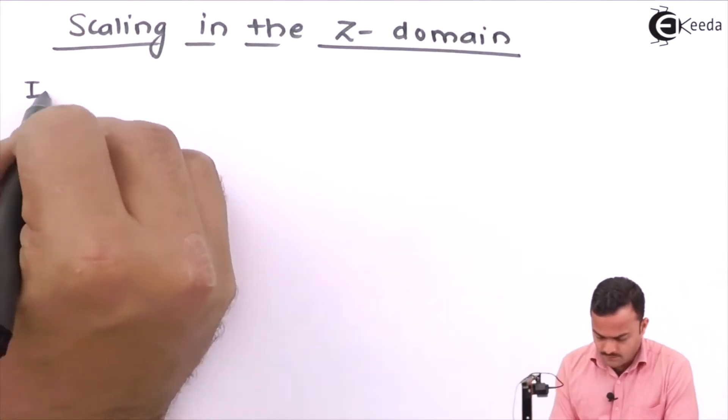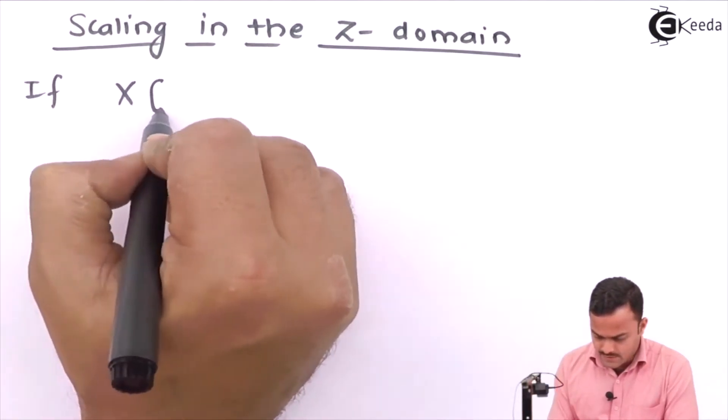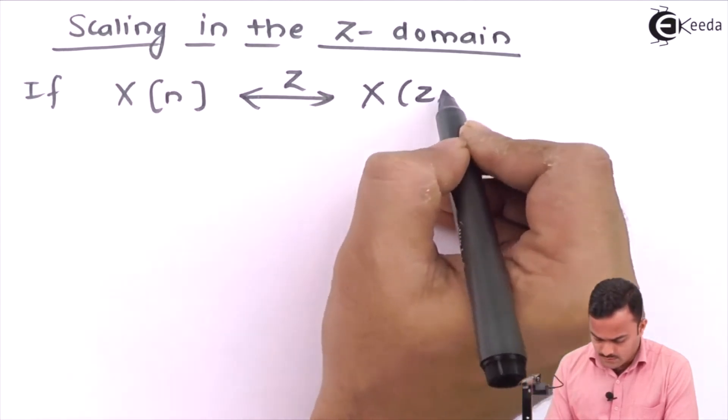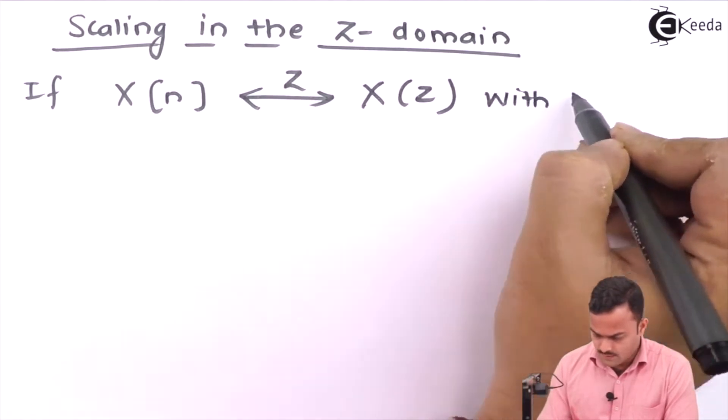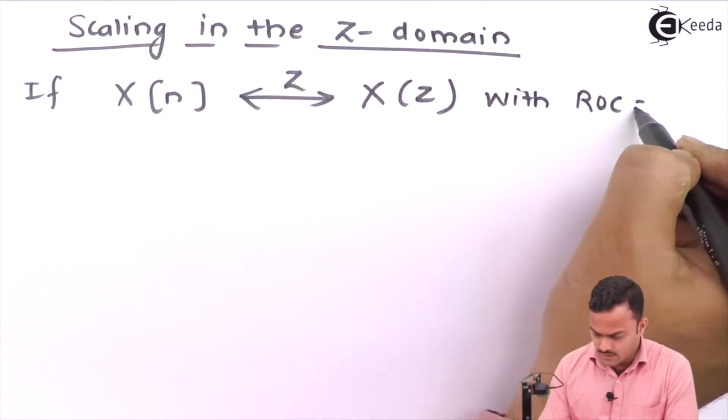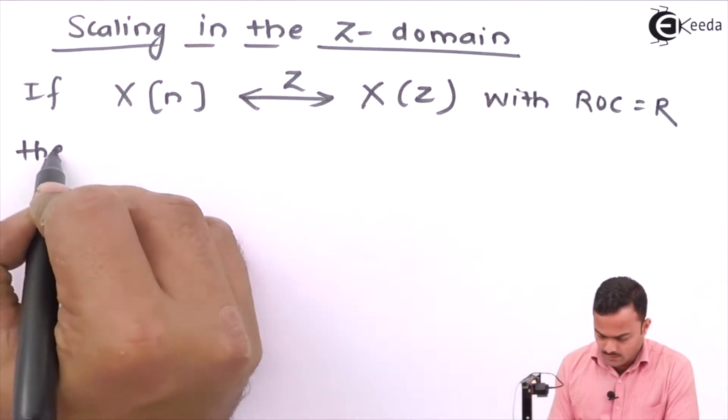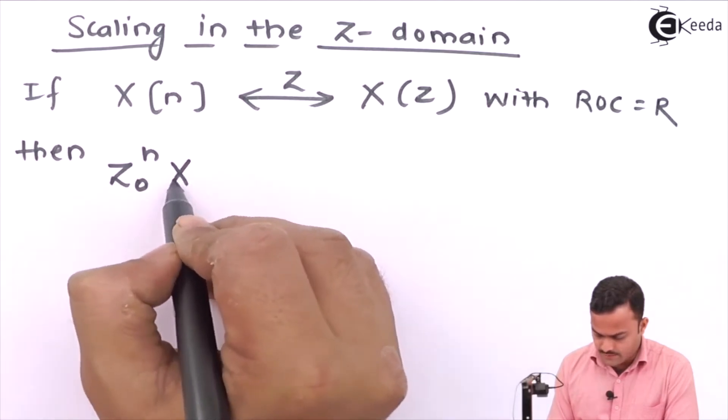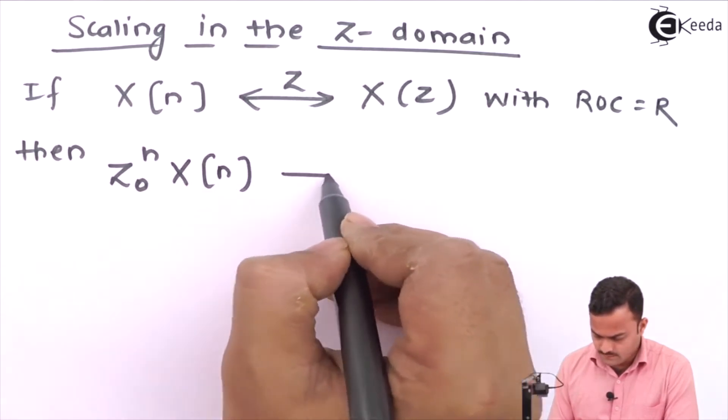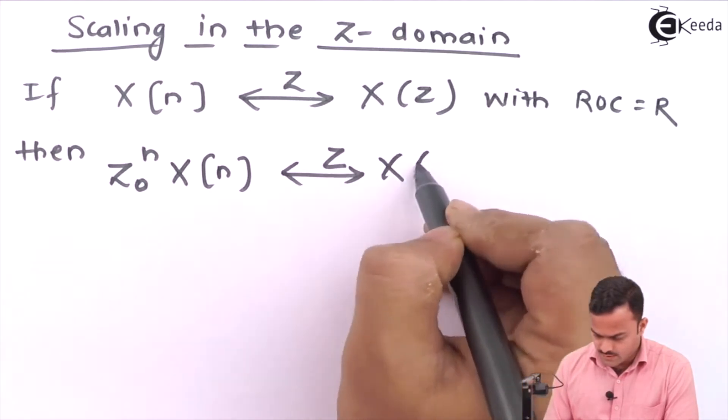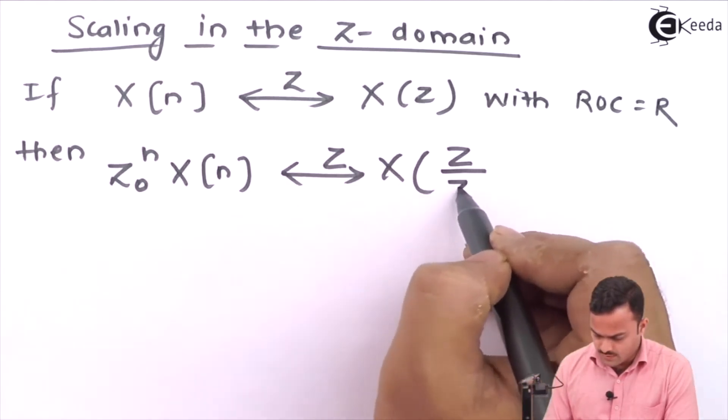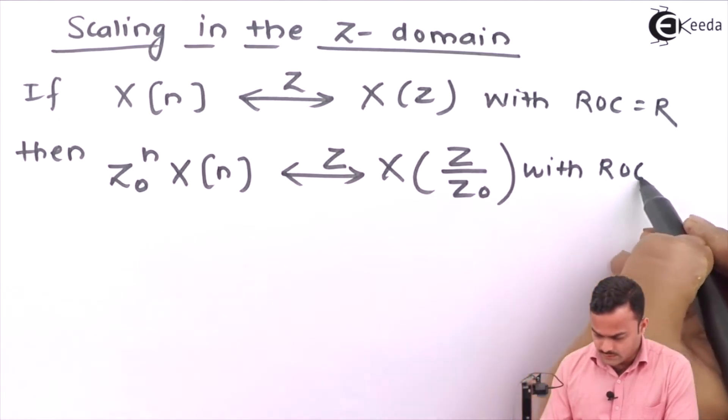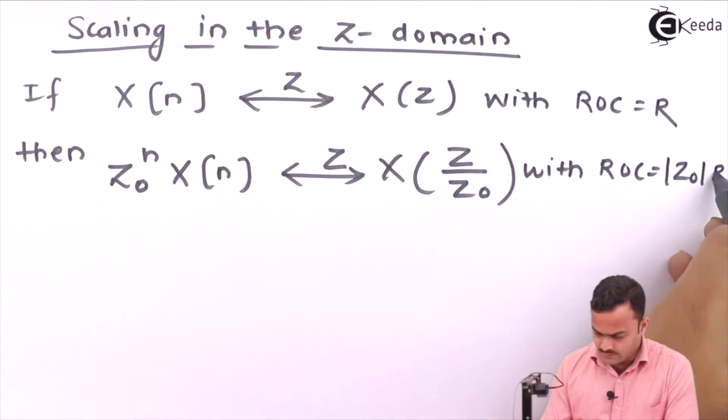It says, if X of N is the signal Z transforms in X of Z with ROC R, then Z0 raise to N X of N will have the Z transform X upon Z0 with ROC mod Z0 into R.